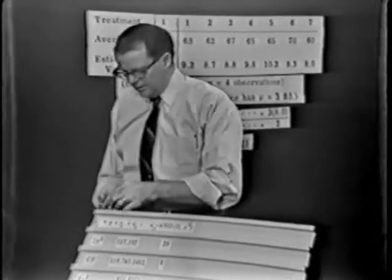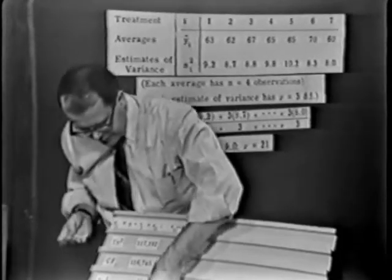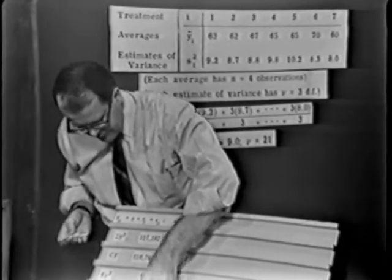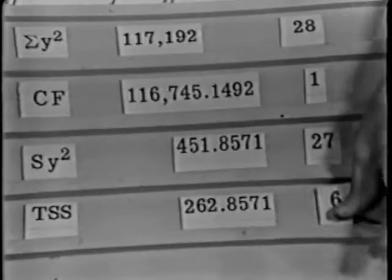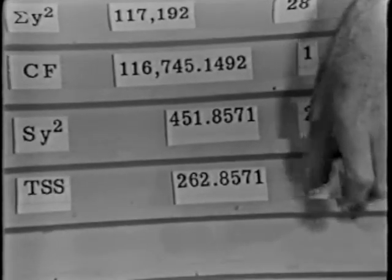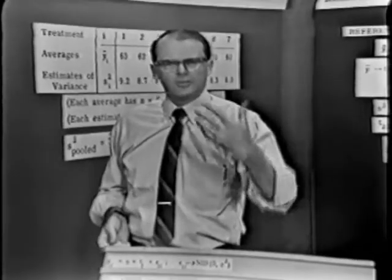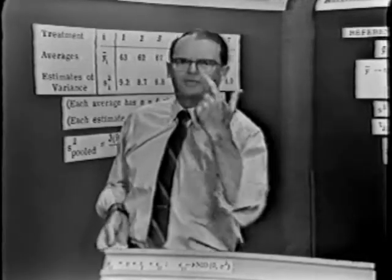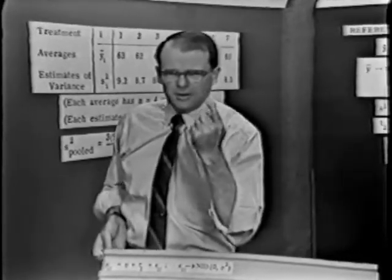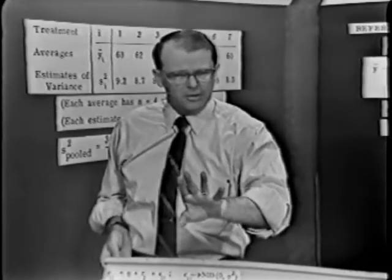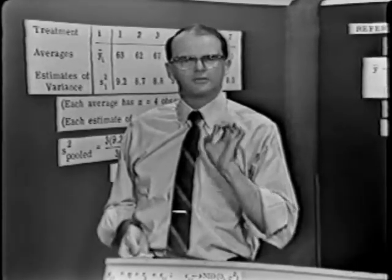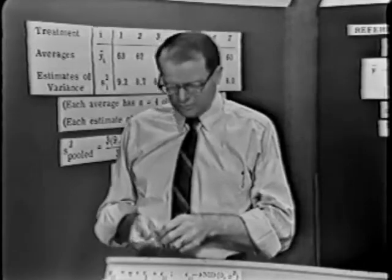The treatment sum of squares came out to be 262 and a bit. That cost me six degrees of freedom. Why is it six? It's six because there are seven treatments, and the algebra of the problem constrains those seven effects to sum to zero. So when I know six of them, I know the seventh one automatically. There are six degrees of freedom consumed in estimating the treatment effects.